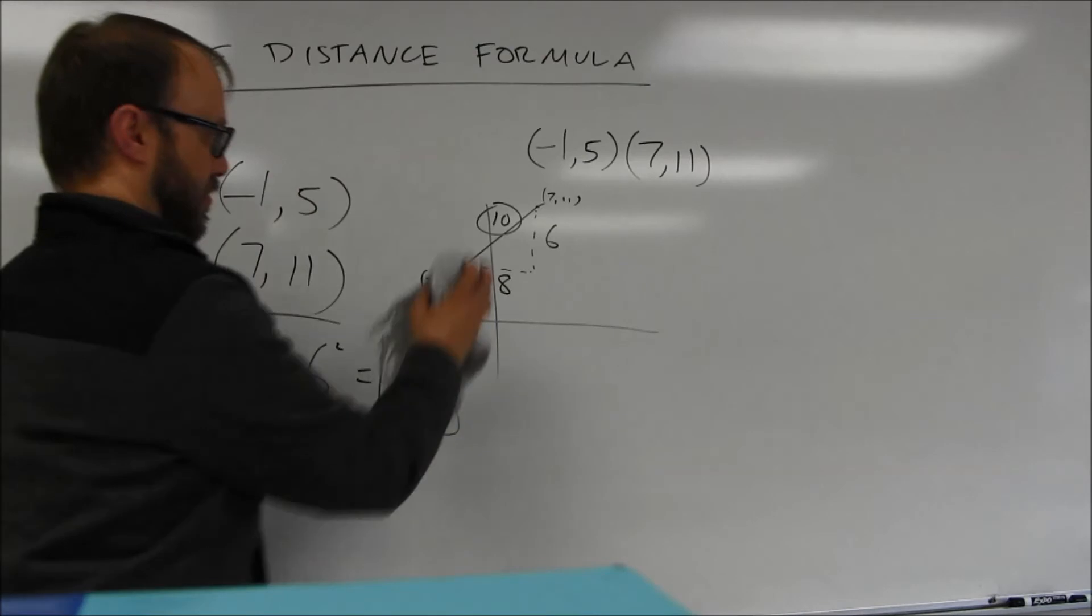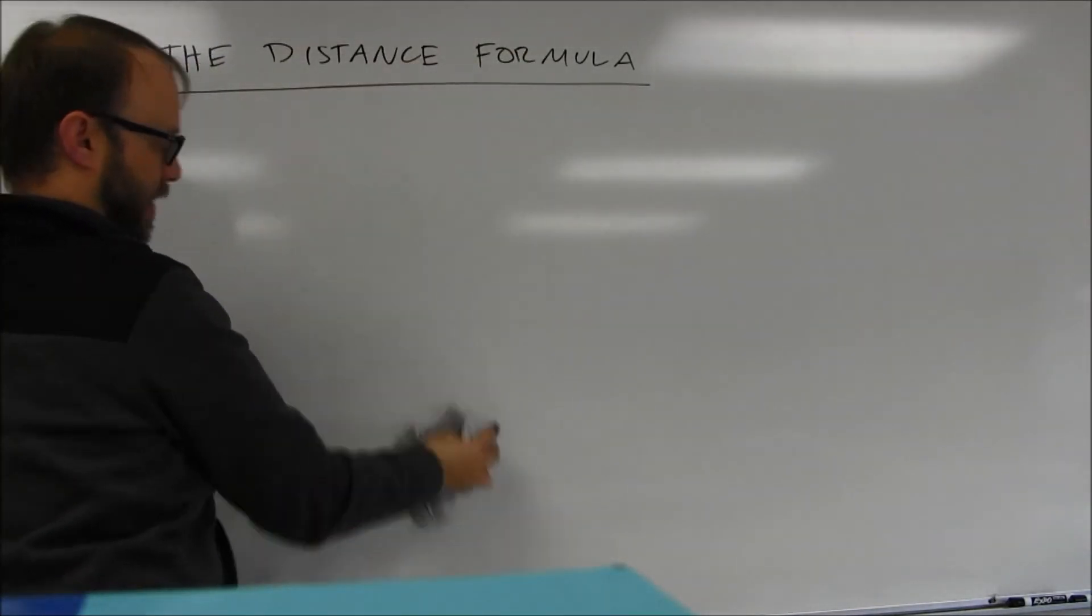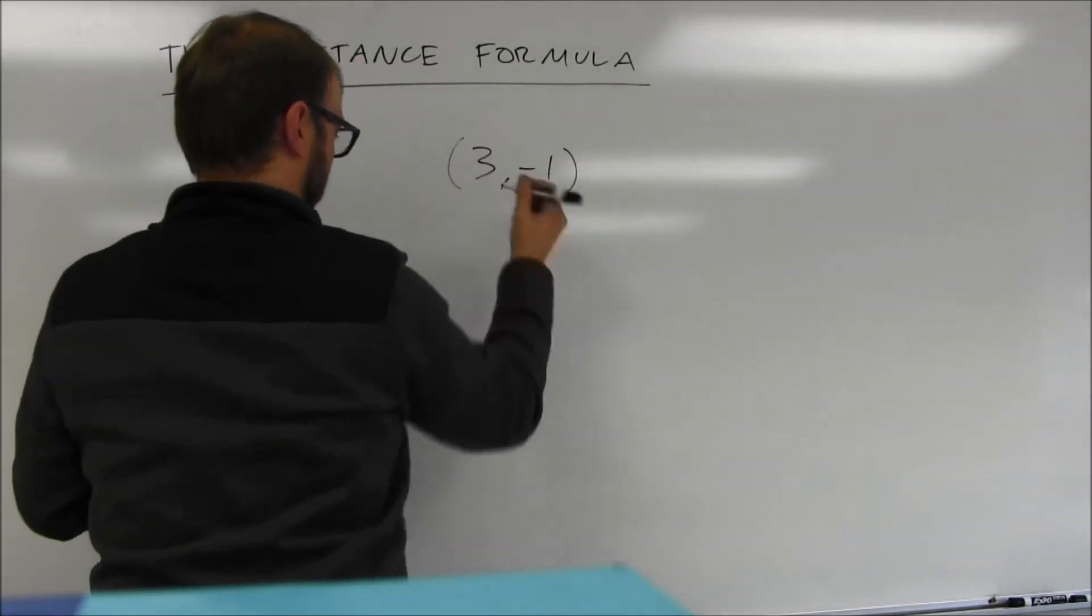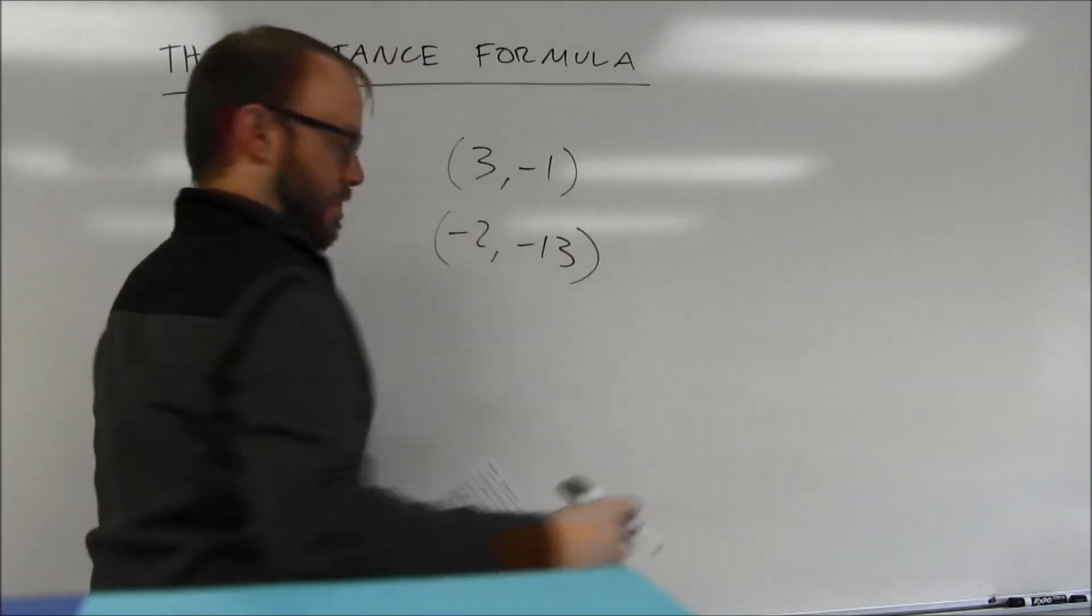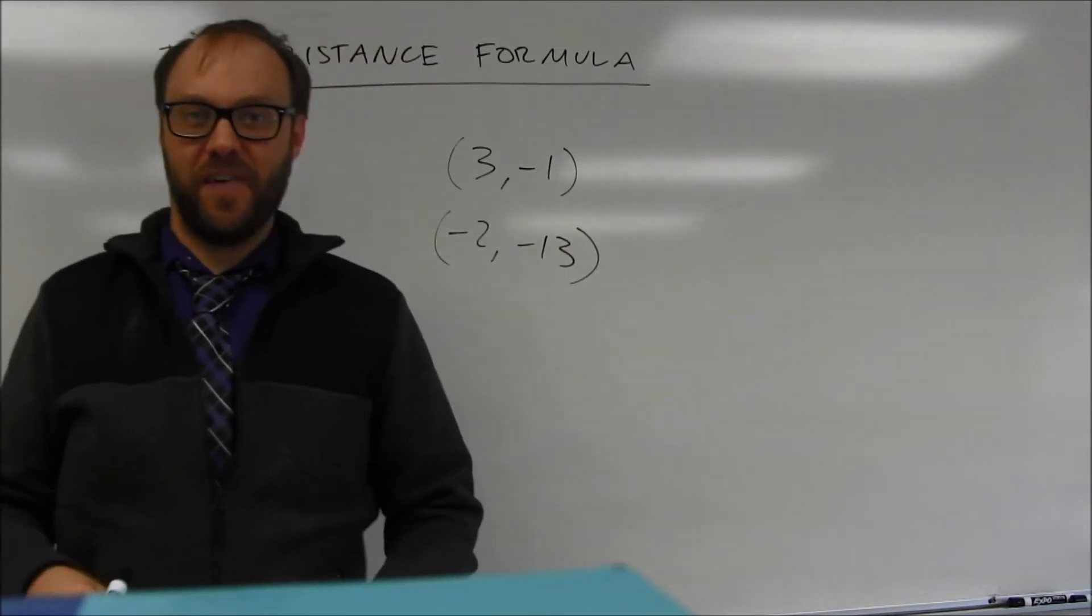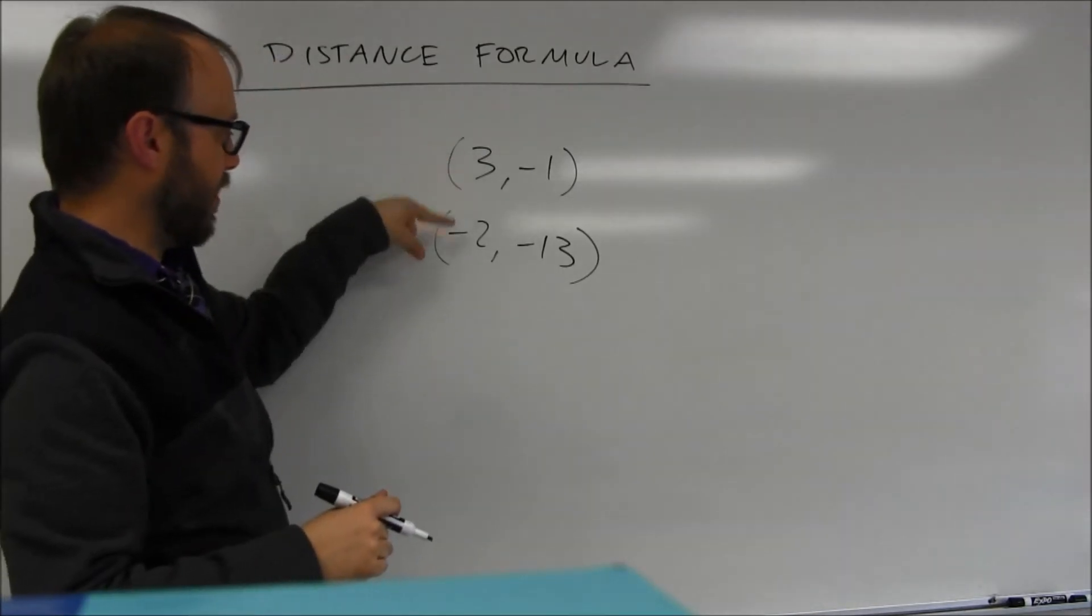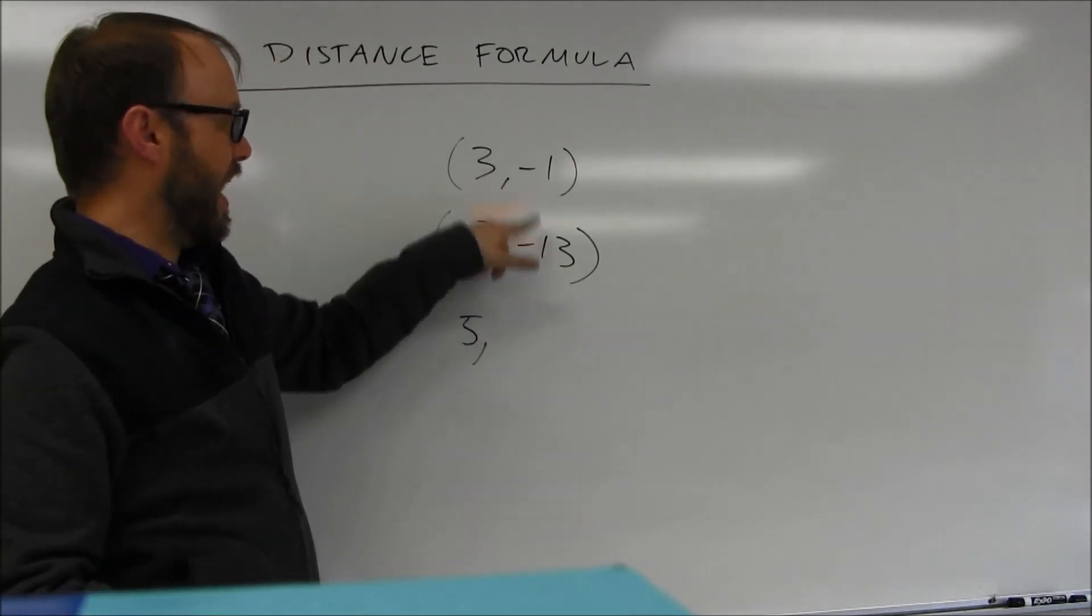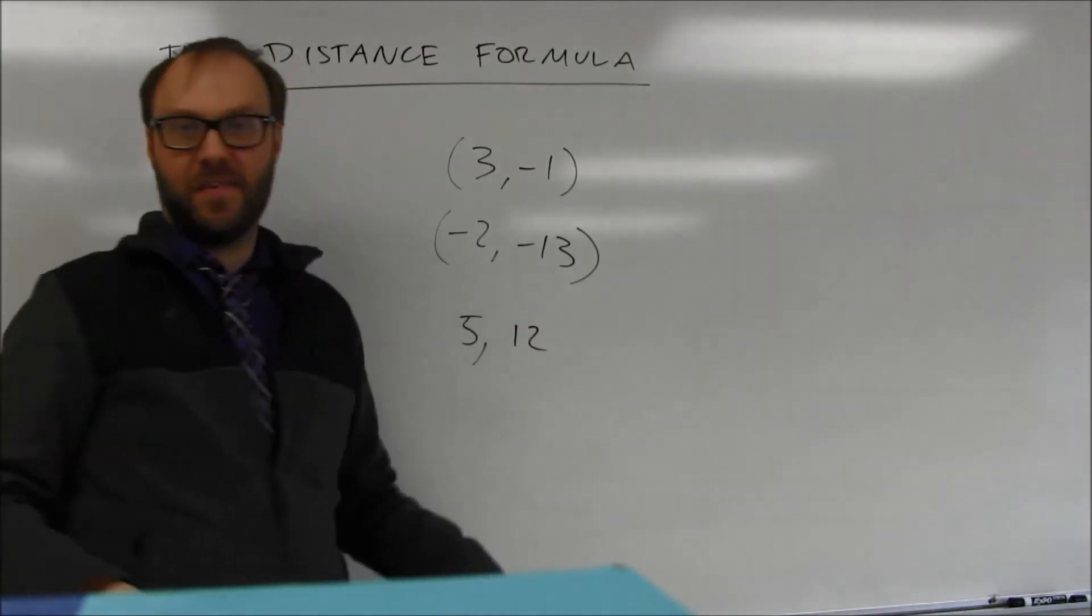So just to show you, and these are the same problems I did in the main video, but just to make the point here, I've got (3, -1) and (-2, -13). Again, I just figure out the horizontal side and the vertical side. In other words, how far apart are the x's? They're 5 apart. How far apart are the y's? -1 back to -13, that's 12 units.